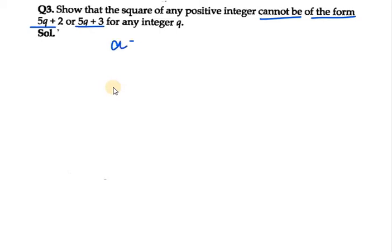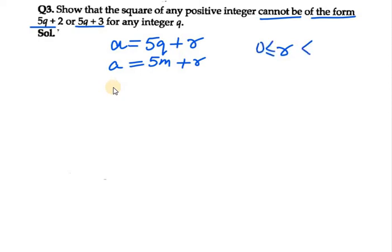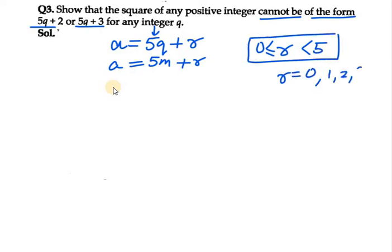To prove this, we use Euclid's division lemma. We know that a equals 5q plus r. I will be taking q as m so that I can write it in the form of a equals 5m plus r. Now r lies between 0 and b, and b in this case is 5. So r can take 5 values: 0, 1, 2, 3, and 4. At these 5 different values we need to find and square the term.